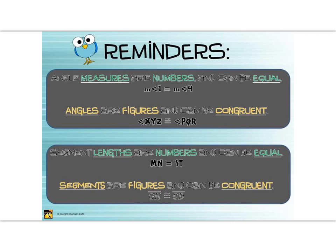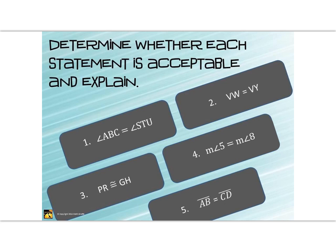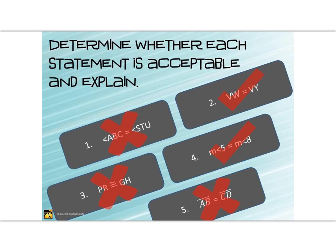Let's do a quick check for understanding the difference between equality and congruence. Take these five examples — determine whether each statement is acceptable and explain why. Pause the video here and think through each statement, paying attention to notation. The unacceptable ones are numbers 1, 3, and 5. To fix number 1, measure requires equality, so you need little M's in front of the angle symbols. For number 3, congruence is for objects, so you need segment bars above the segment names. For number 5, length uses equality, so you remove the bars. Numbers 2 and 4 are correct.